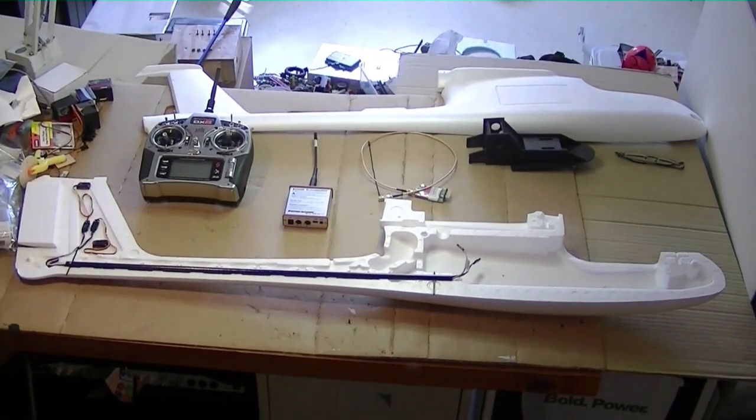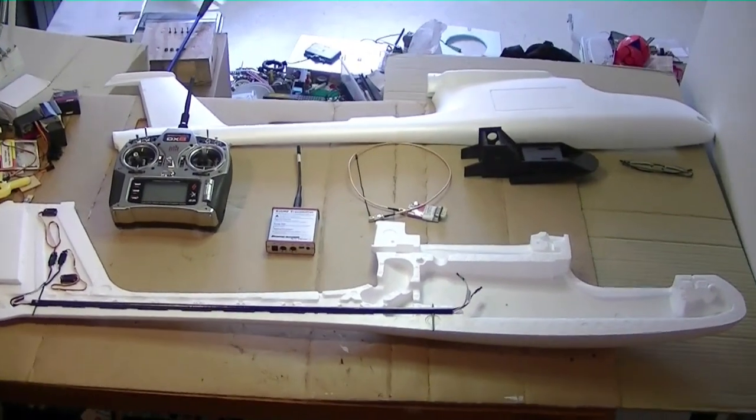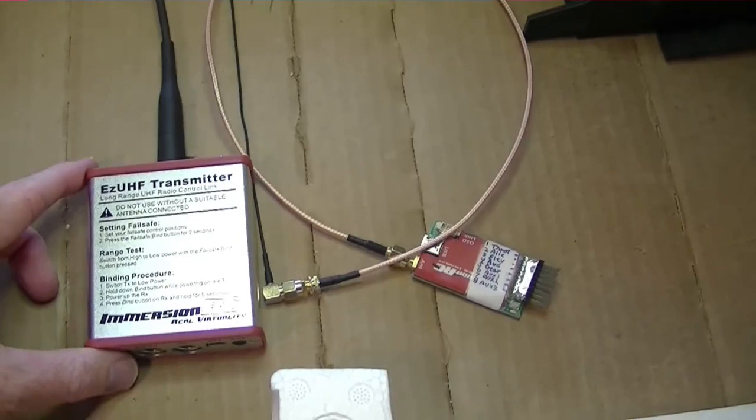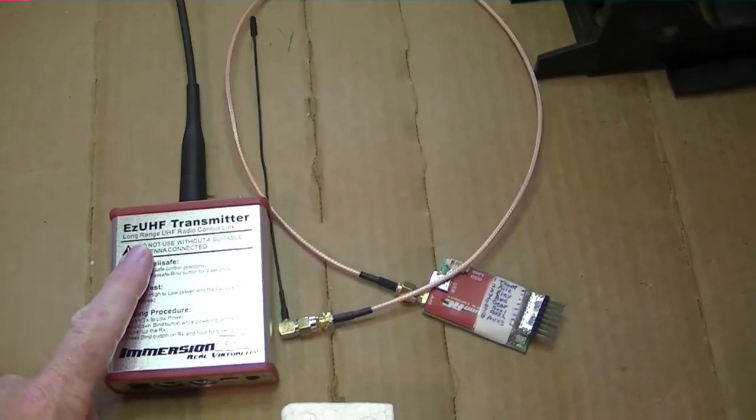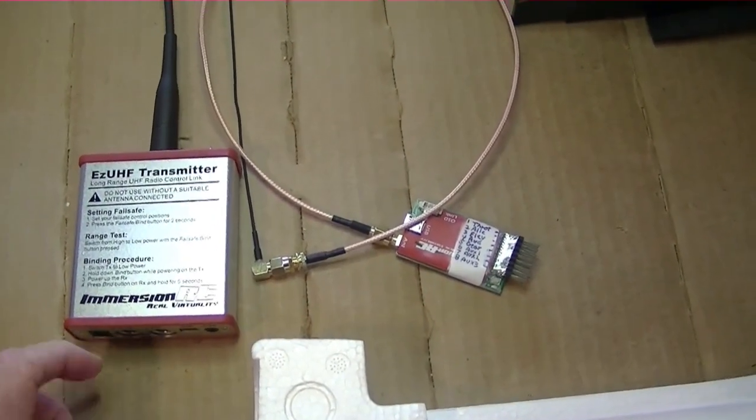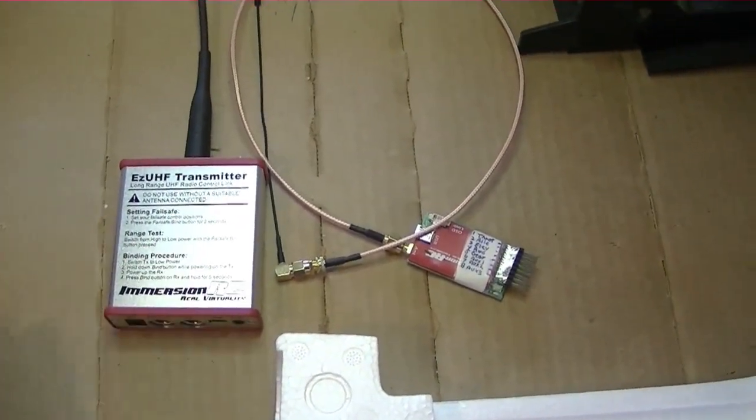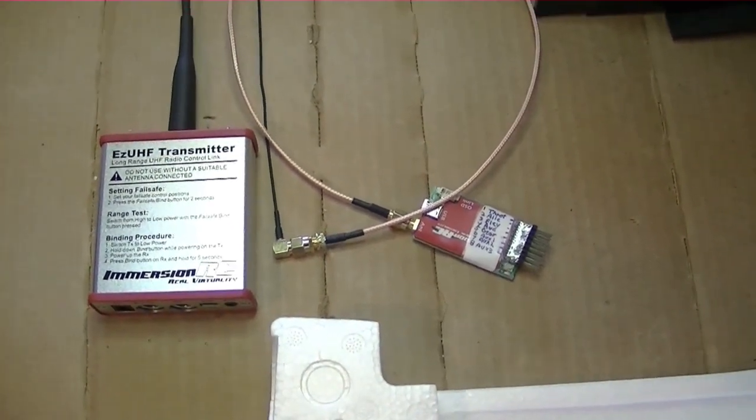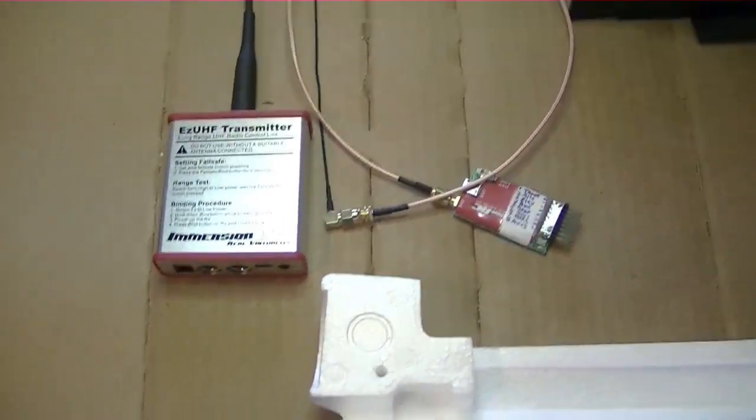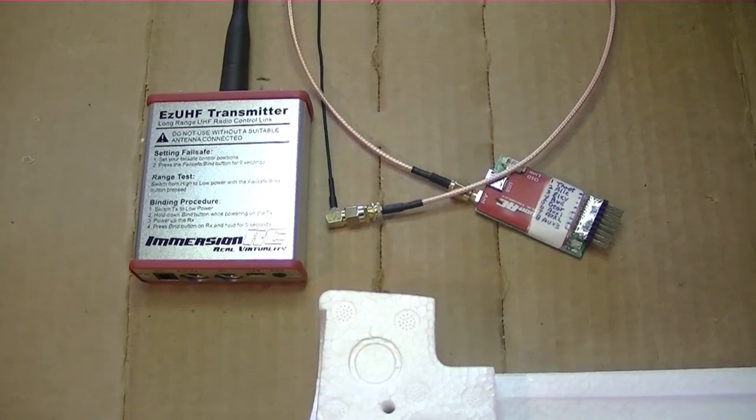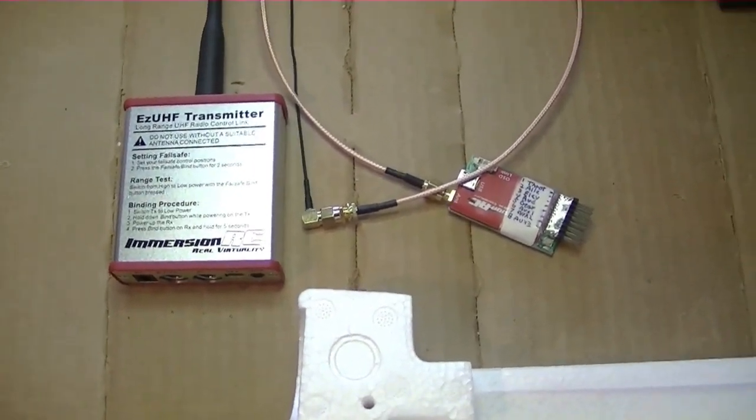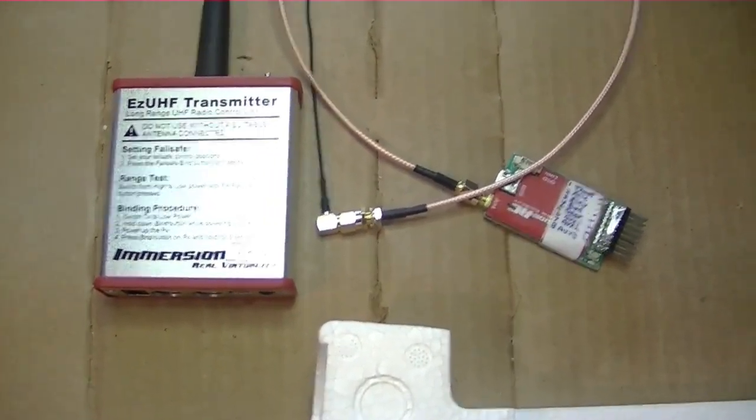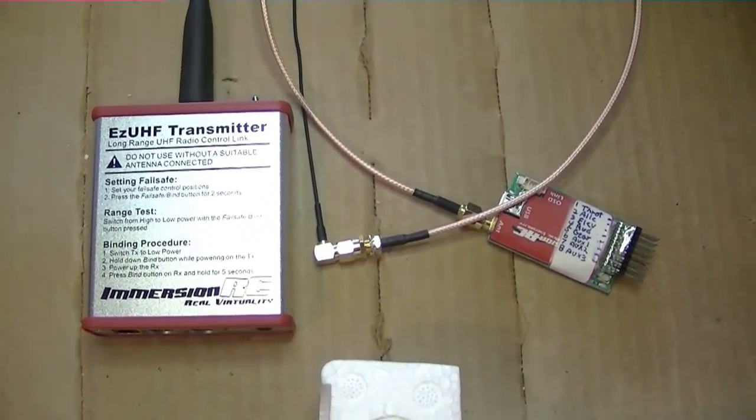Okay, I've got the Skywalker plane laid out on the bench here. And let's talk about the LRS first. In this case I'm using the EZ UHF transmitter from Immersion RC, but it could be other brands. Some common ones are, for example, the Dragon Link or the Open LRS. But I think the confusion with the term LRS is it's hard to tell what is really meant by LRS. It means long range system, but what system are we talking about?